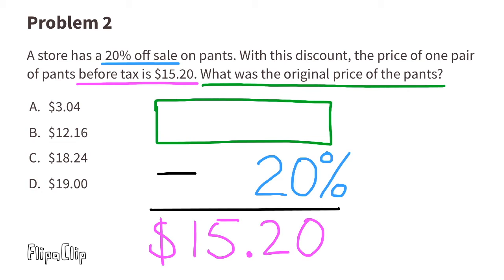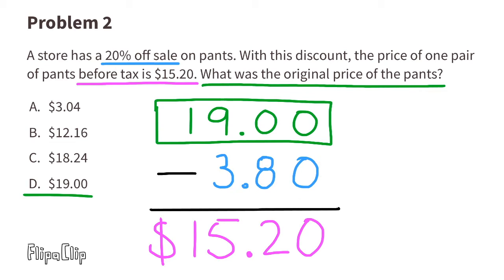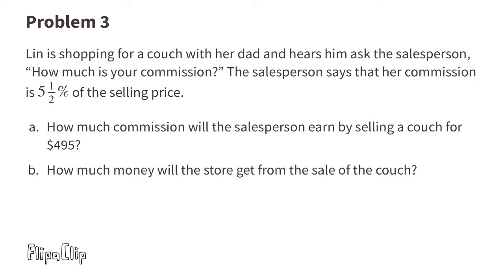We can think of it like this: the original price of the pants minus 20% of the original price of the pants will equal the sale price, $15.20. Let's try $19. Ten percent of $19 is $1.90, so 20% of $19 will be two times $1.90, or $3.80. Since $19 minus $3.80 equals $15.20, we know that the original price of the pants was $19.